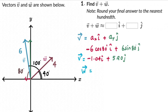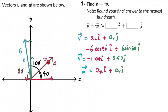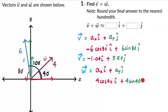Now for vector w, resolving it into components in the same format a_x î + a_y ĵ: the horizontal component is 4 cos 40° because vector w already makes an angle of 40 degrees with the positive x-axis, and the component adjacent to theta is the cosine component. The vertical component is 4 sin 40°. Working this out: vector w = 3.06 î + 2.57 ĵ.